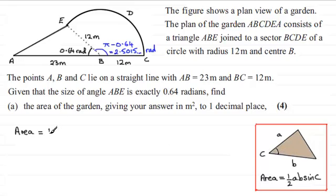So for this one it's going to be a half of 23 times 12 times the sine of the included angle which is 0.64 radians.